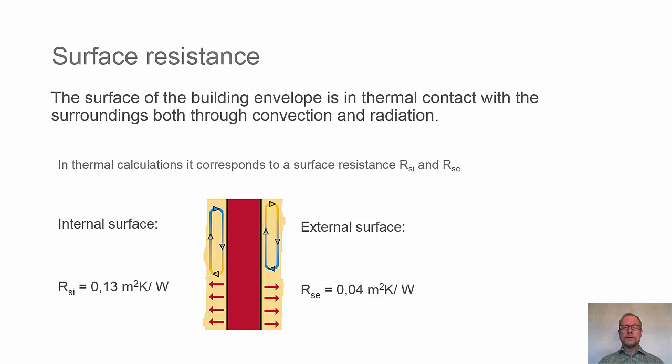And on the inside we call it RSI, surface interior, and an external one RSE. These are default values: 0.13 square meter Kelvin per Watt on the inside, and 0.04 square meter Kelvin per Watt on the outside. The surface resistance is lower on the outside since we have more air movements due to wind, so the convective part of the surface resistance is lower.